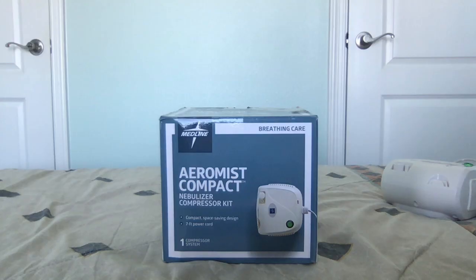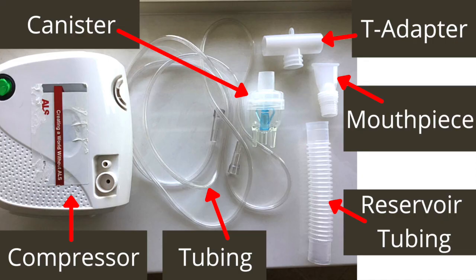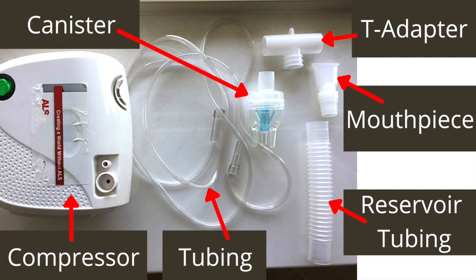When you receive a nebulizer, it will most likely arrive in a box with several different parts: a compressor, nebulizer canister, plastic tubing, a mouthpiece, a T-adapter, and a straight piece of plastic tubing called reservoir tubing.